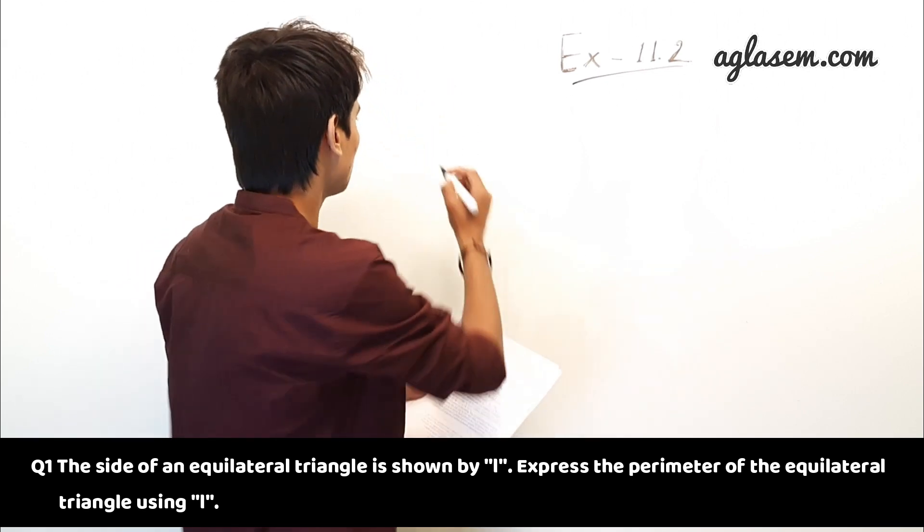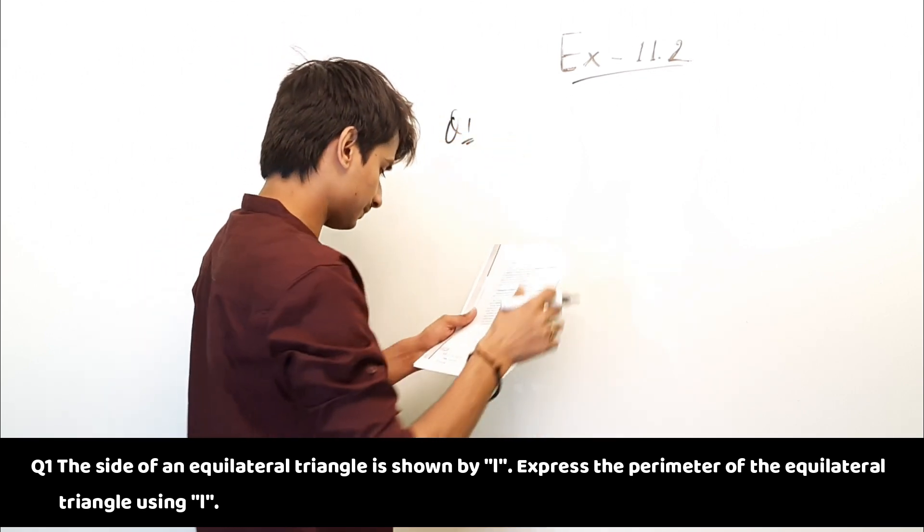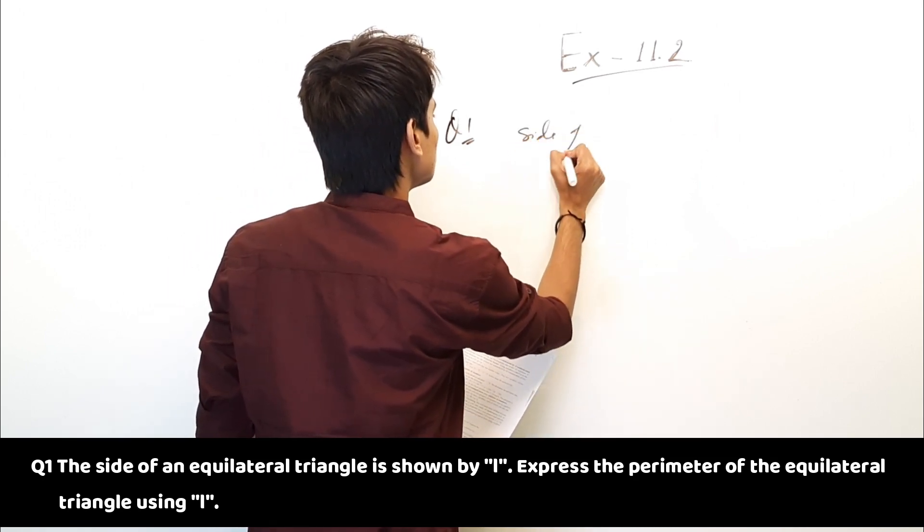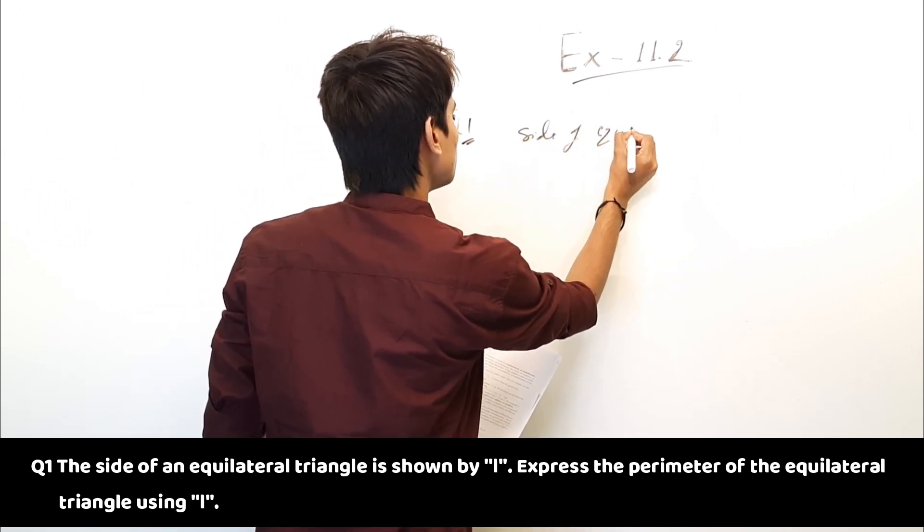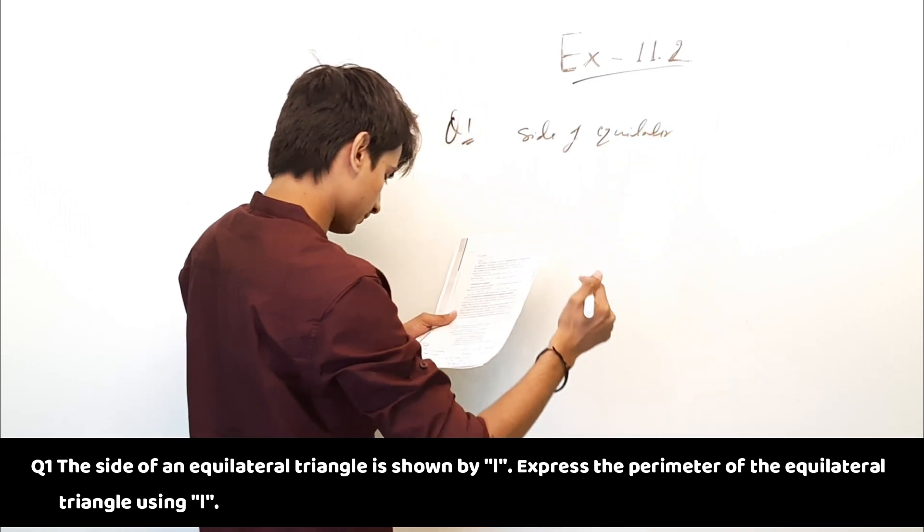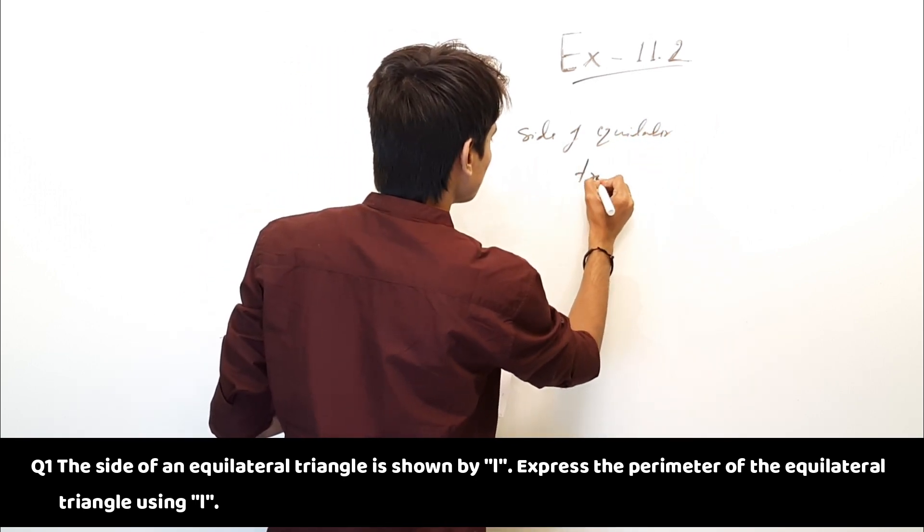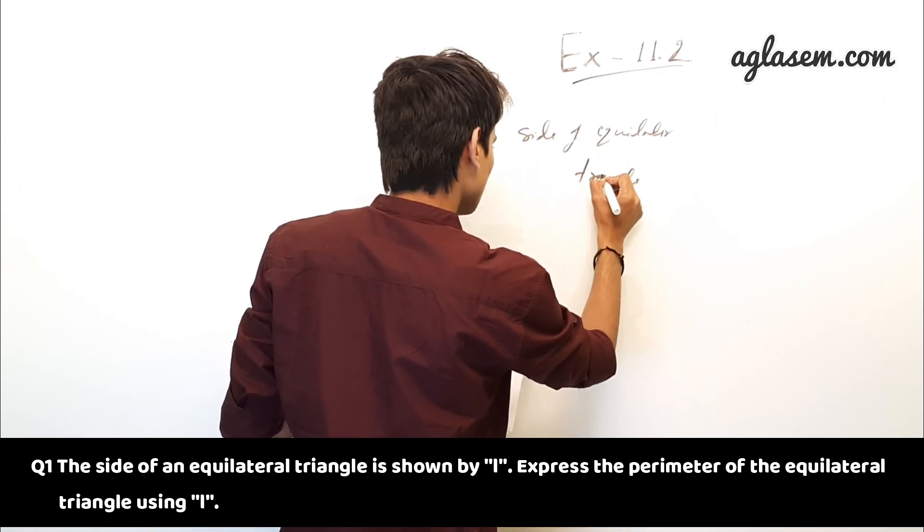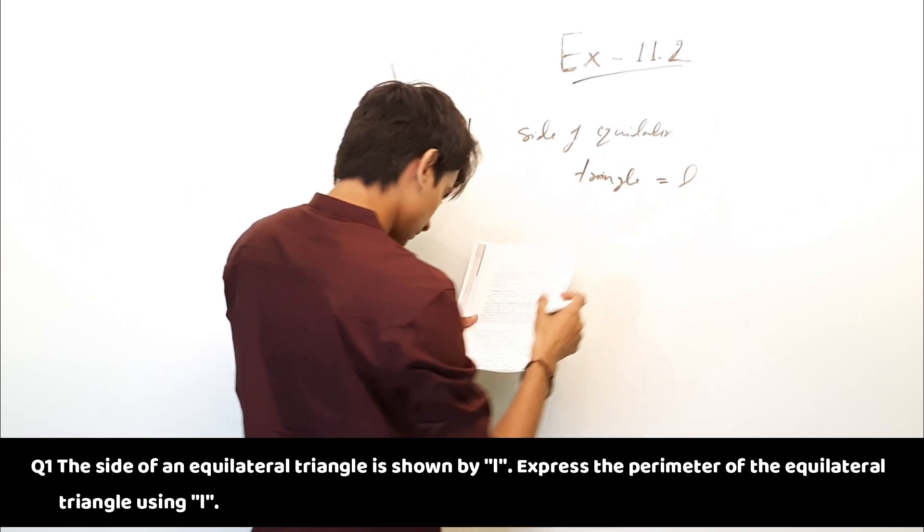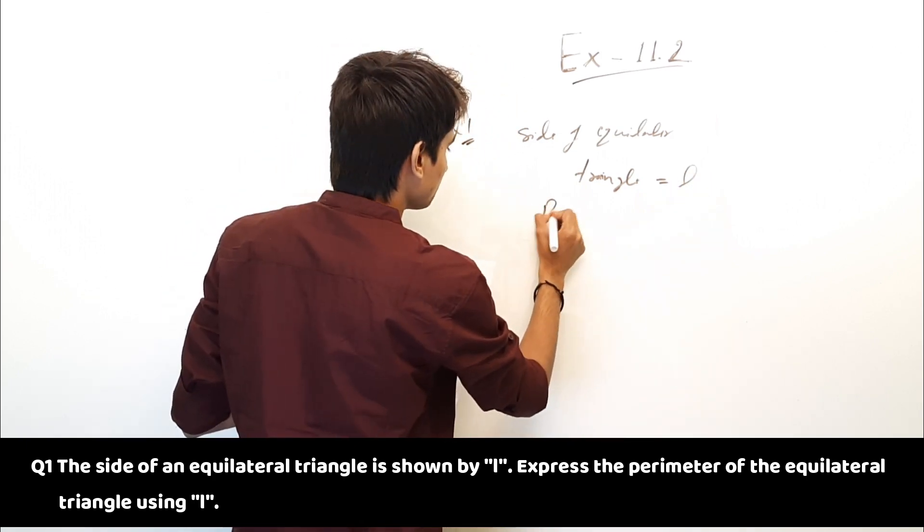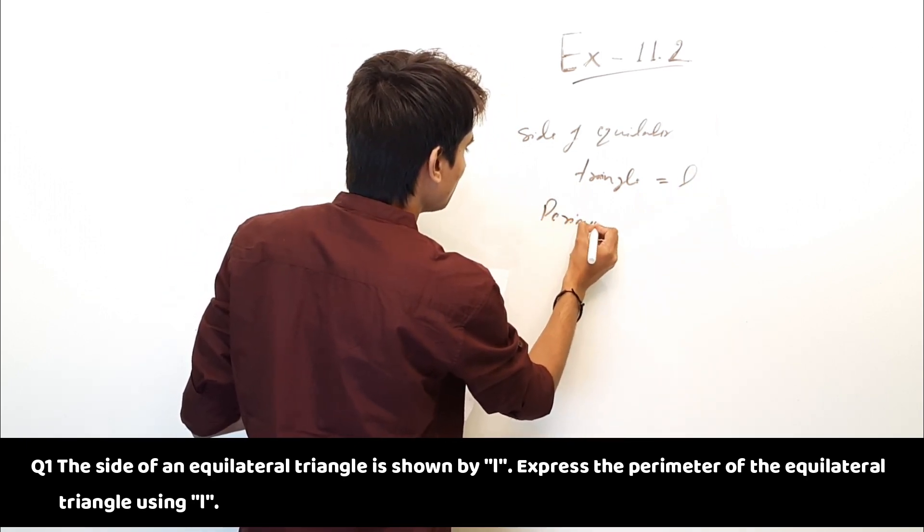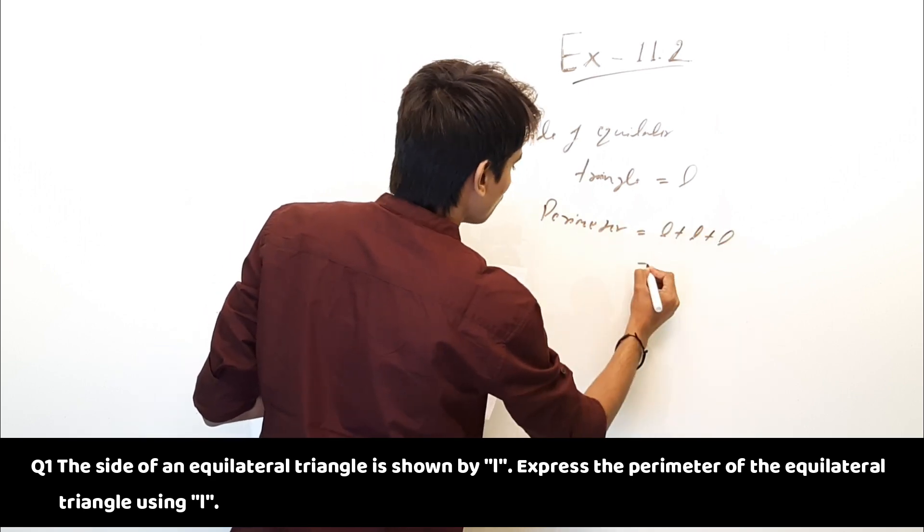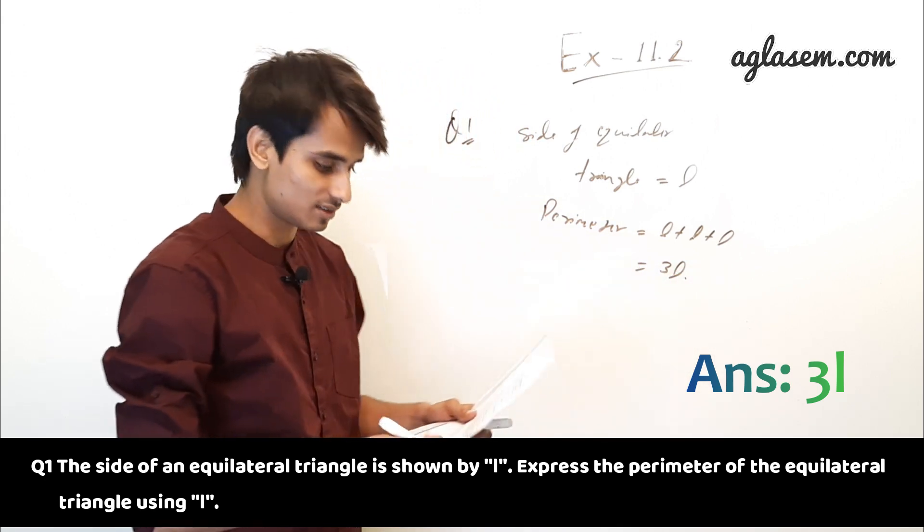So let's start the solution. Side of equilateral triangle is equal to L. So perimeter is equal to L plus L plus L. So the answer is 3L.